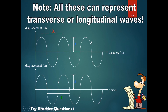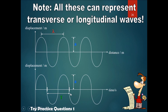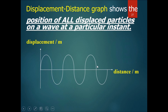Here we see two different types of graphs: the displacement-distance graph and the displacement-time graph. These two graphs represent different things, but they can be used together in conjunction to describe the same wave. The displacement-distance graph tells us the amplitude and wavelength, while the displacement-time graph tells us the amplitude and the period.